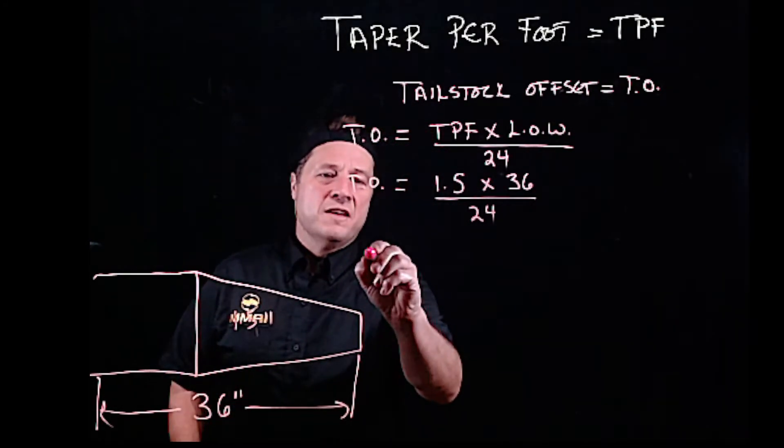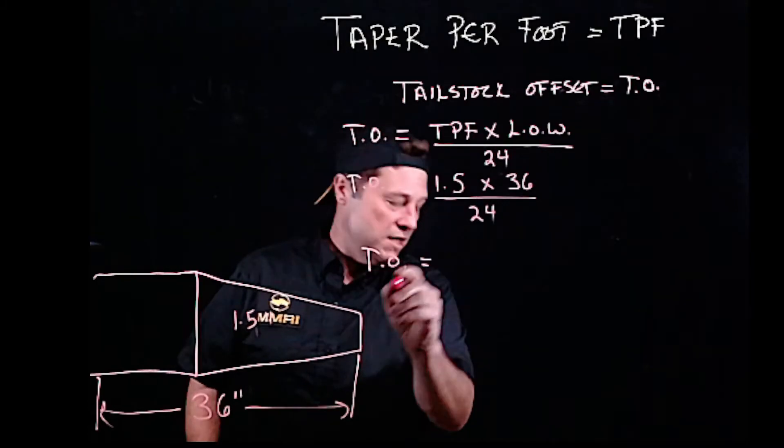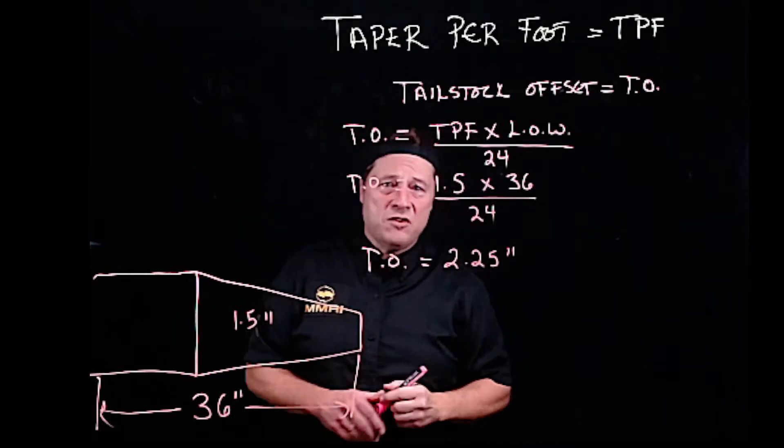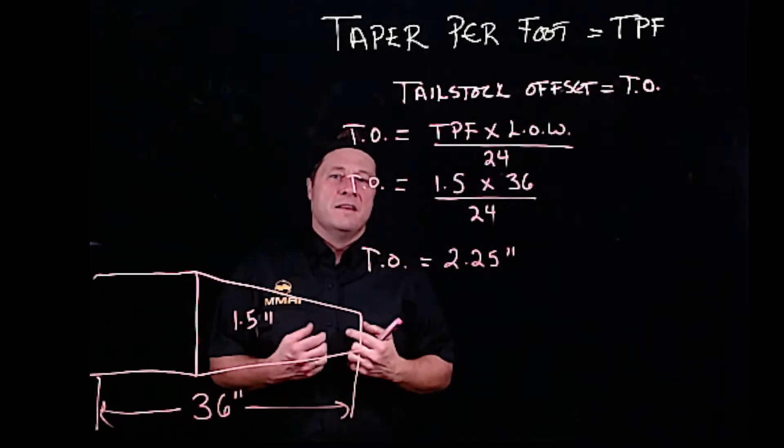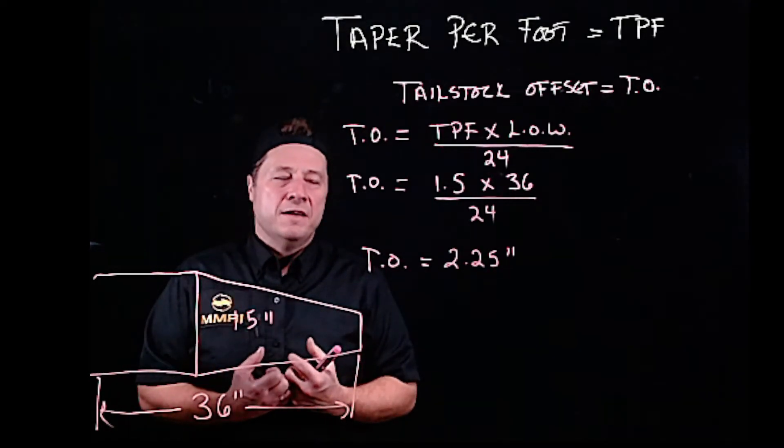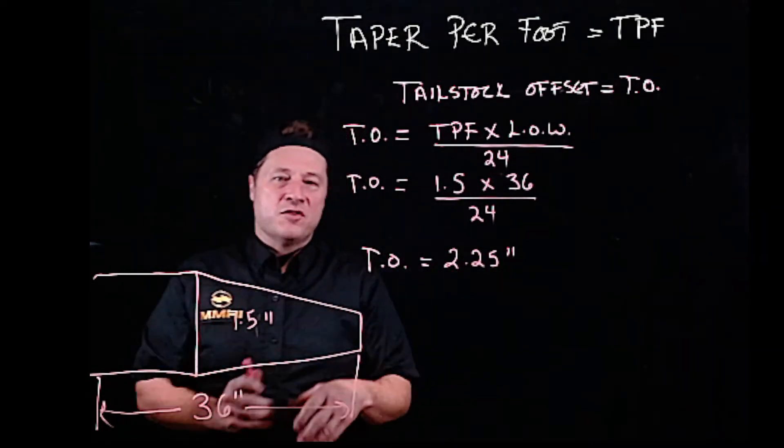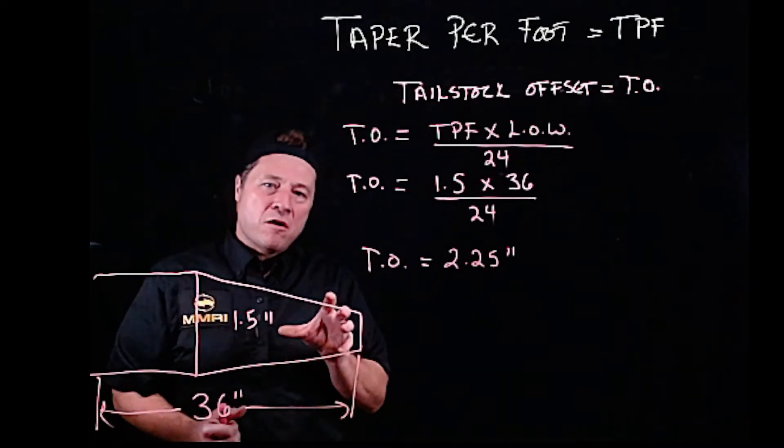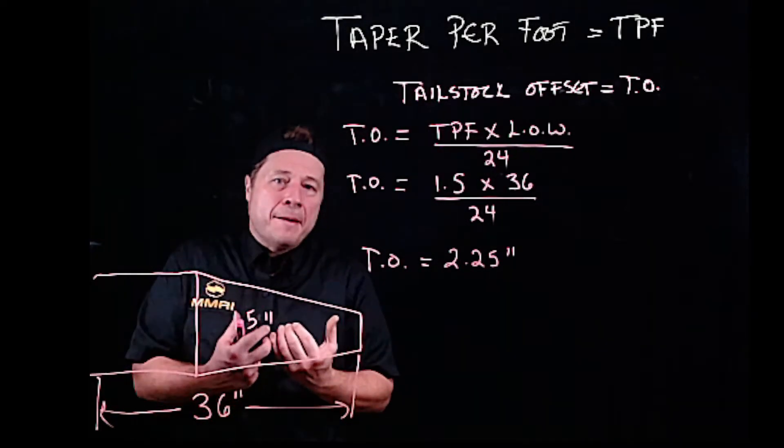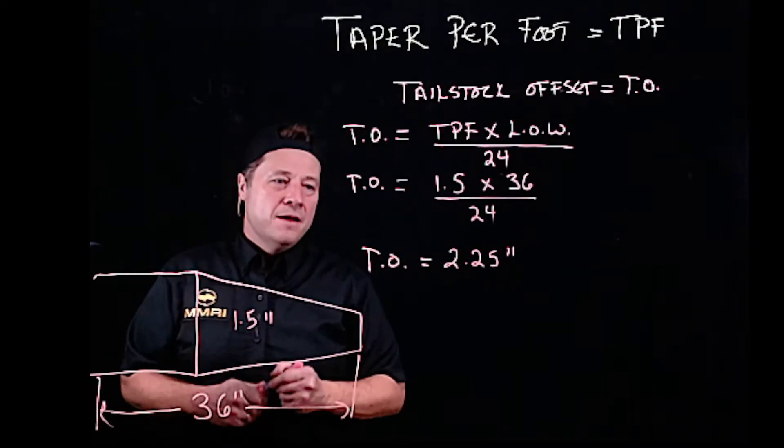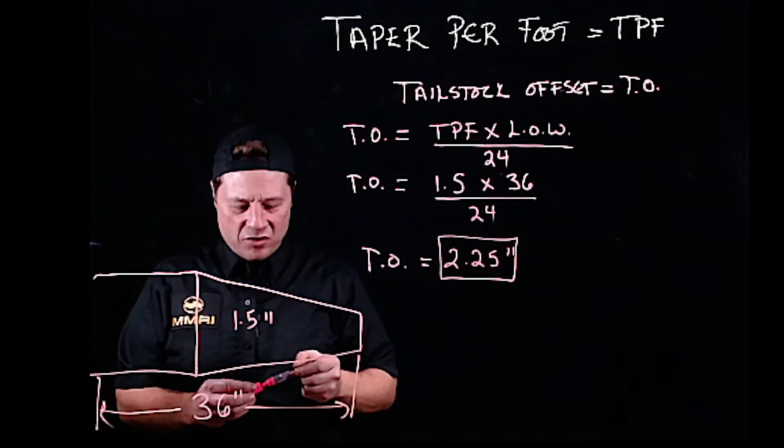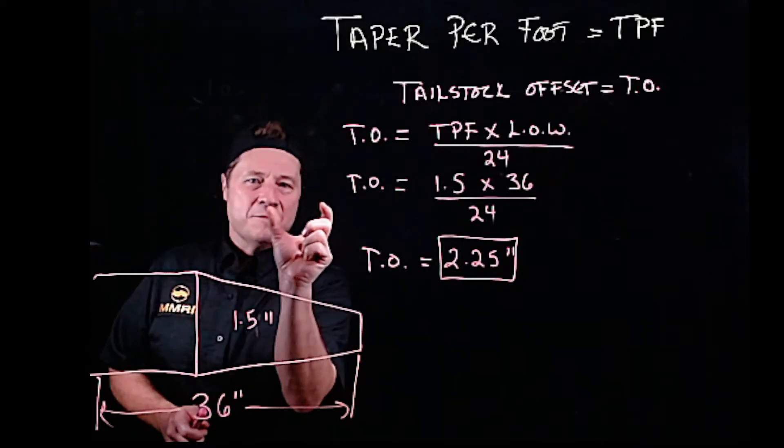Our tailstock offset is equal to 2.25 inches. Here's something you need to understand: what we've solved here is how far we have to push away or pull towards us the upper casting of that tailstock. This is a big number. 2.25 inches, think about that. I need to move my tailstock, the upper casting, 2.25 inches.